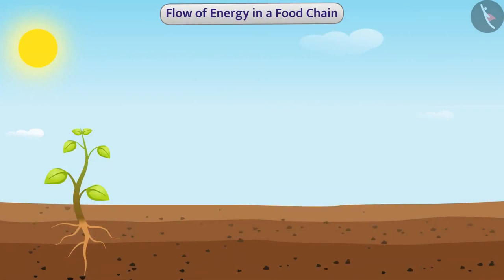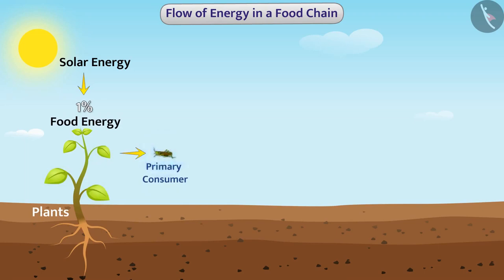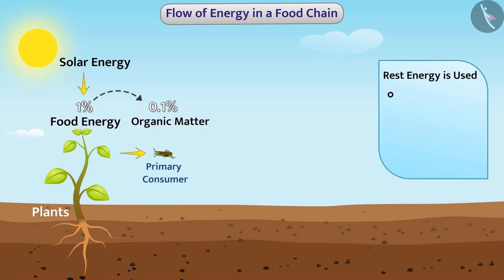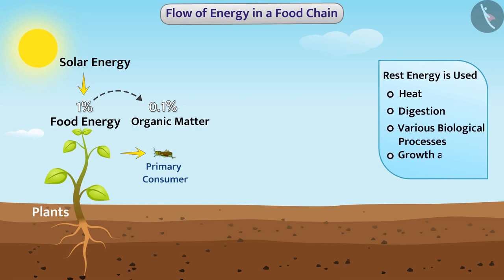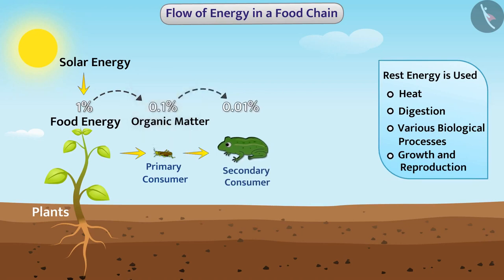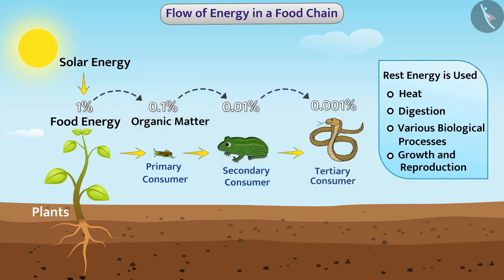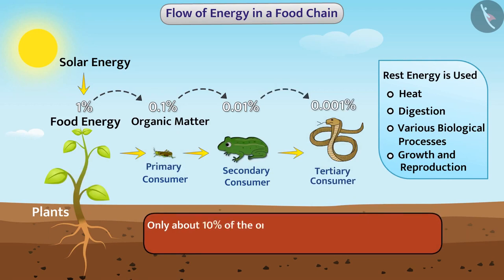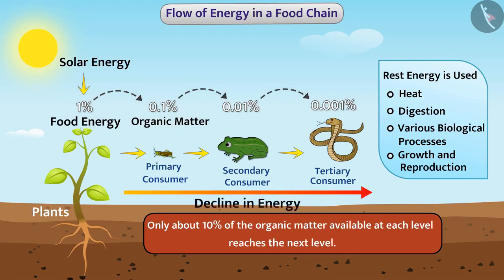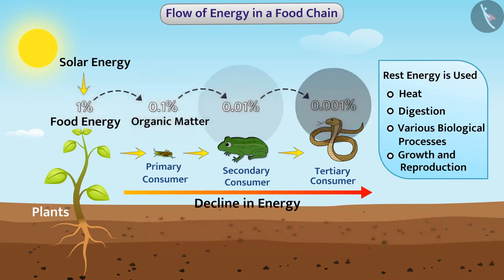The main source of energy in any ecosystem is the energy contained from sunlight. Plants convert about 1% of solar energy into food energy. When plants are eaten by primary consumers, only 10% of the eaten food is converted into organic matter, and the rest of the energy is used up in heat, digestion, and various biological processes such as growth and reproduction. In this way, only 10% of consumed food is available for the next level consumer. This is true for each level, so only about 10% of organic matter available at each level reaches the next level. Thus, there is a progressive decline in available energy at each trophic level.